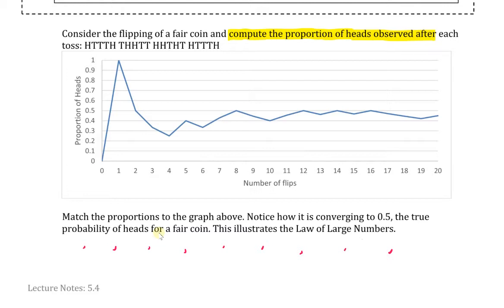It is more realistic to expect this random process to have maybe a head, tail, tail, tail, head, so that these outcomes will vary from toss to toss. What we want to do is compute the proportion of heads that we observe after each toss. For example, maybe after the first toss we see the coin lands on a head, so the proportion of heads observed at this point would be one head out of one toss, or one.